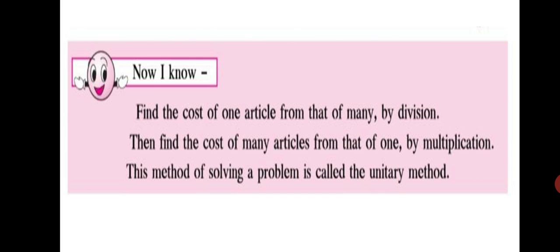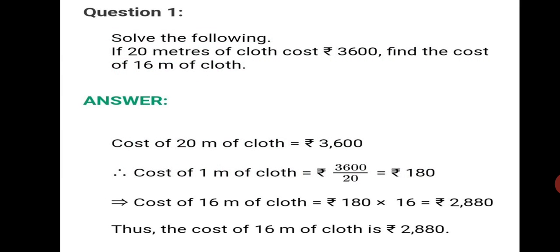It is very simple. As you solve the sums, you will be able to understand it clearly. Let's move on to Practice Set 29, first sum. If 20 meters of cloth cost Rs. 3600, find the cost of 16 meters of cloth. Look at the answer. Cost of 20 meters of cloth is equal to Rs. 3600. We write the first statement as it is.